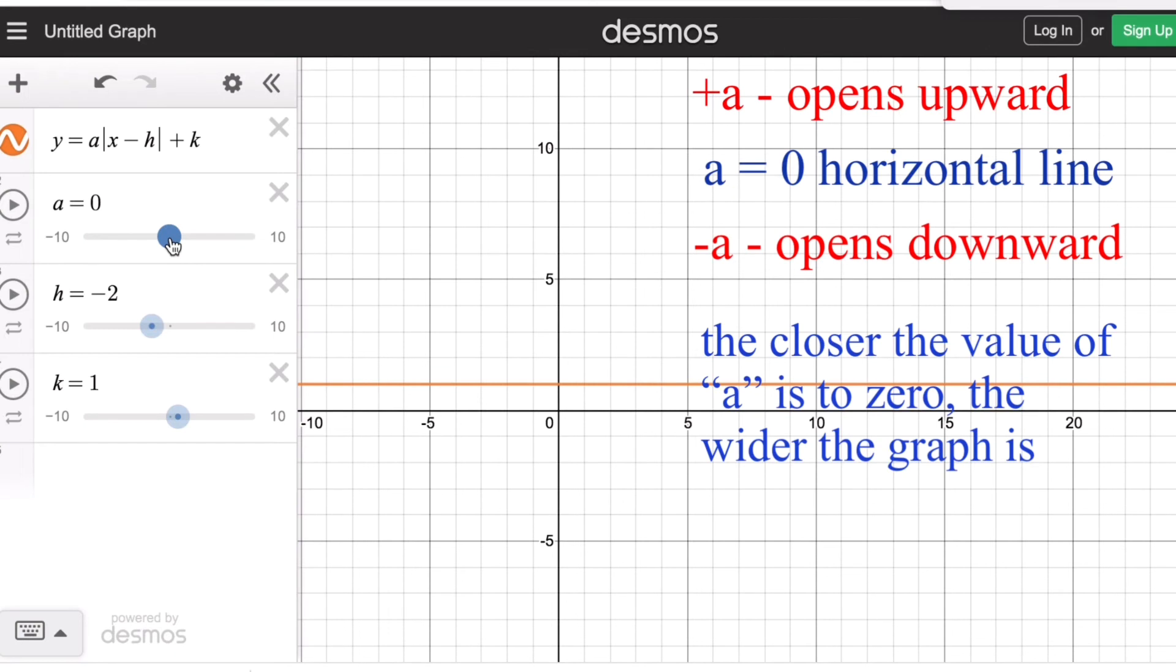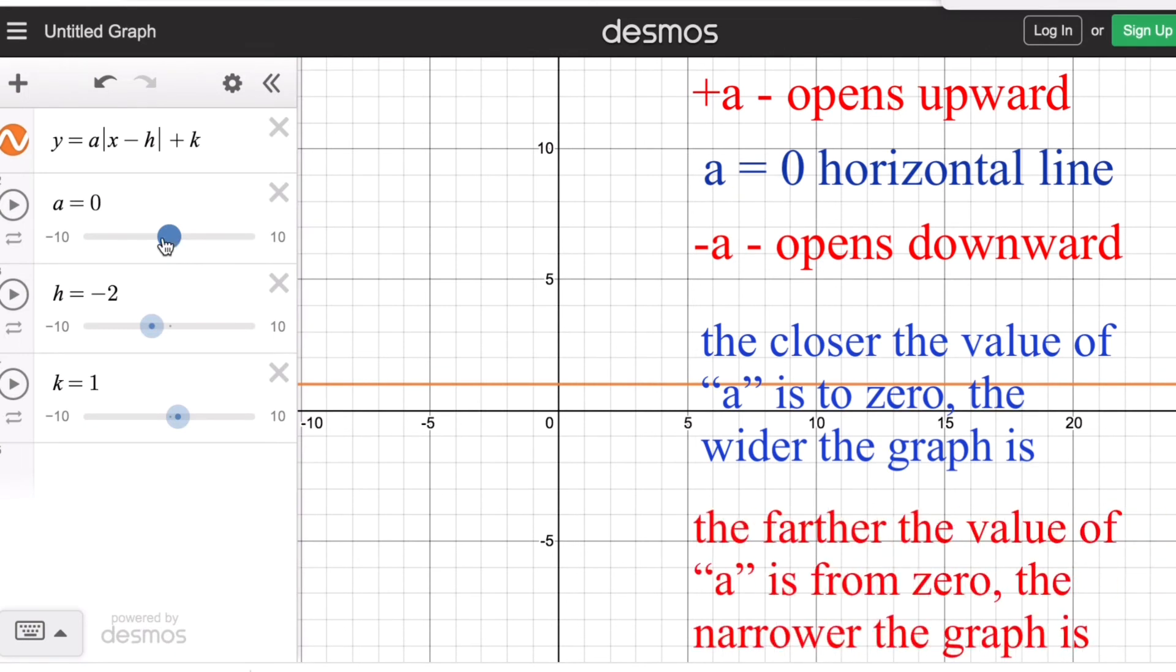On the contrary, we remember that the farther the value of a is from zero, meaning if we go towards the negative side, the graph becomes narrower. As we go farther from zero, it becomes narrower.